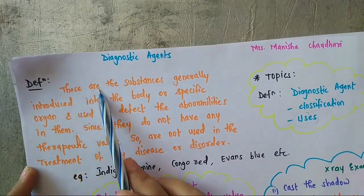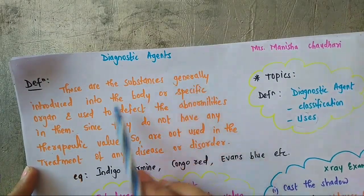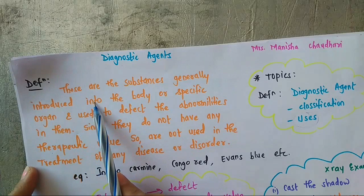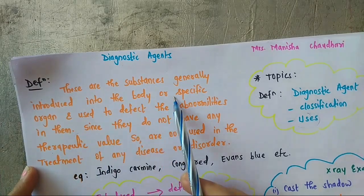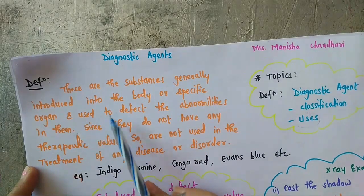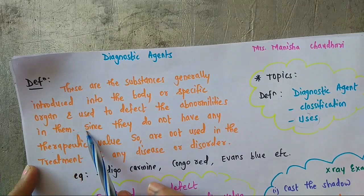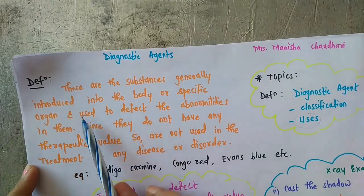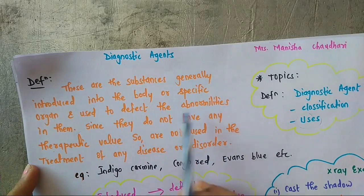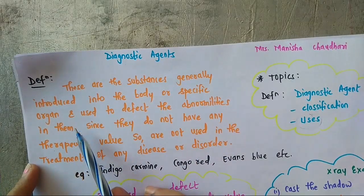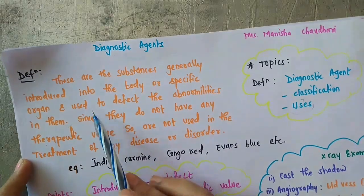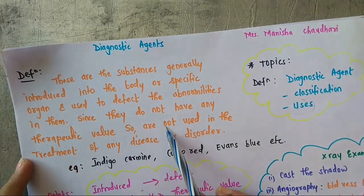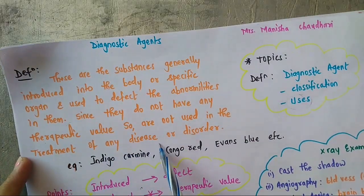What the definition says? These are the substances generally introduced into the body through any route — say intravenous route or orally — introduced into the body or specific organ such as kidney or liver, and used to detect abnormalities in them. That means the organ is functioning properly or not. Since they do not have any therapeutic value, they are not used in the treatment of any disease or disorder.